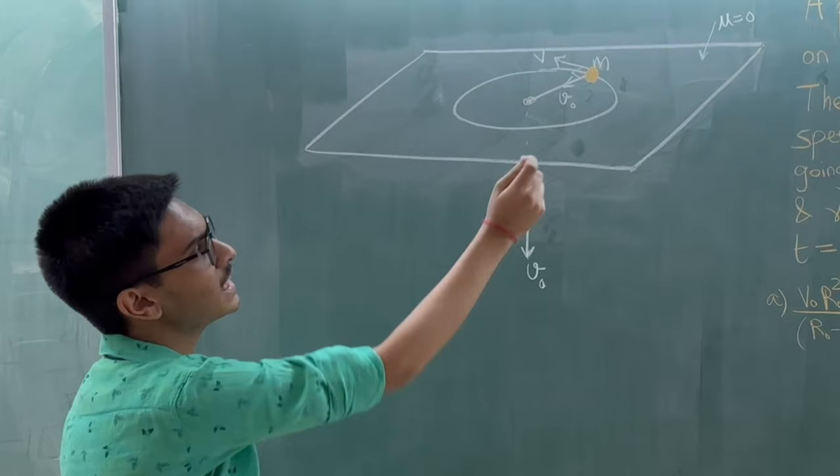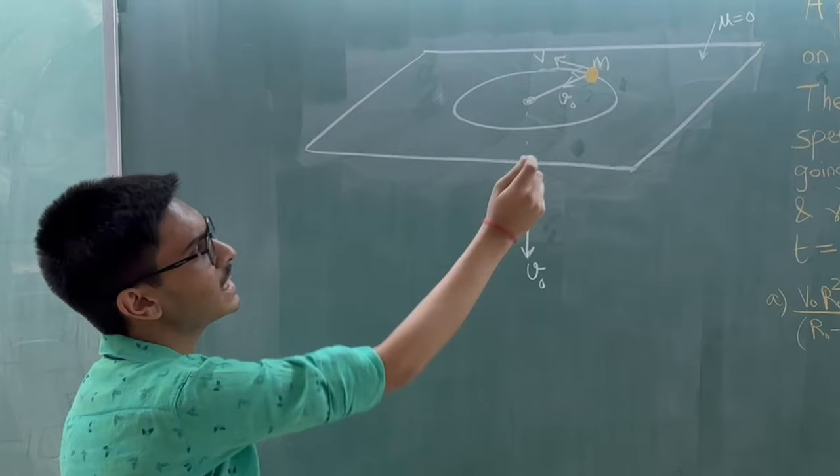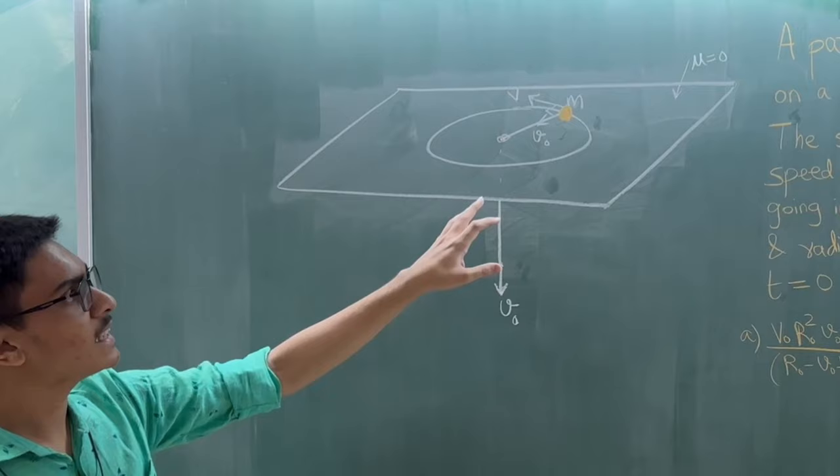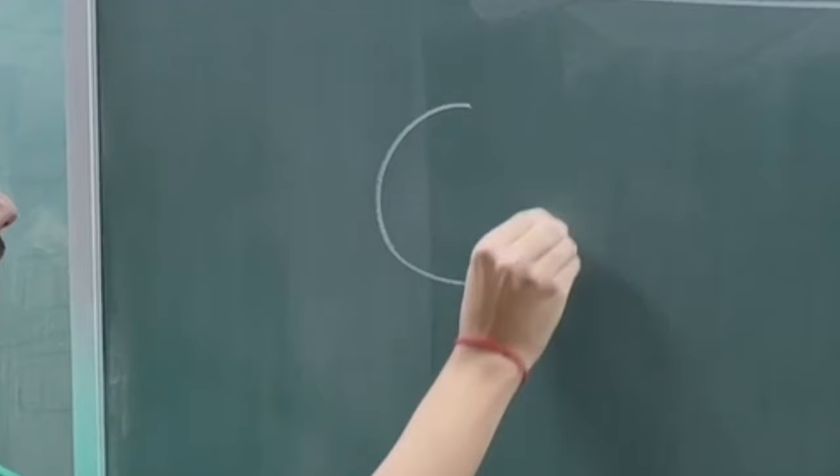An object, a particle of mass M, is whirling on a frictionless table. We are whirling it in a circle along the table through a hole, and we are pulling that rope from below at constant speed u₀. So it will start a circular motion, but it will spiral inwards.